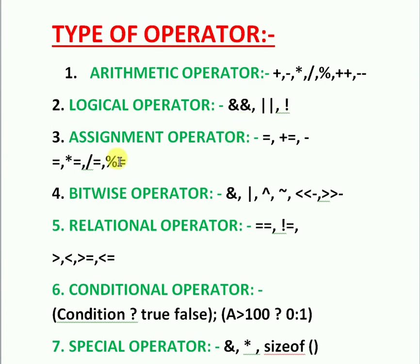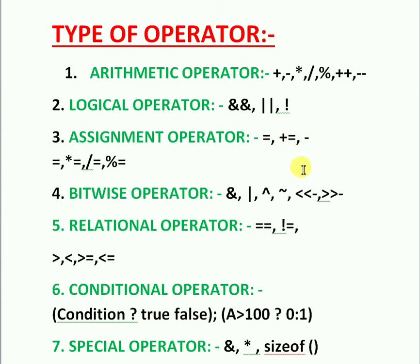Next, assignment operators. Equal-to (=) is called the assignment operator — it is used to assign a value from the right-side operand to the left-side operand. Plus-equal-to (+=) is addition assignment — it stores the sum of both operands to the left-side operand.